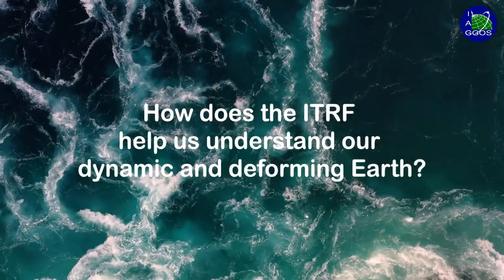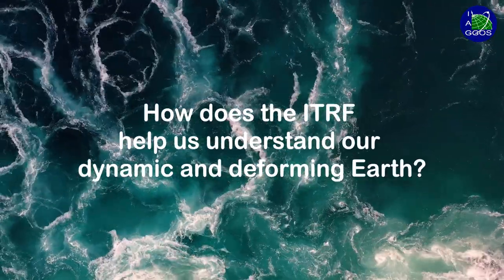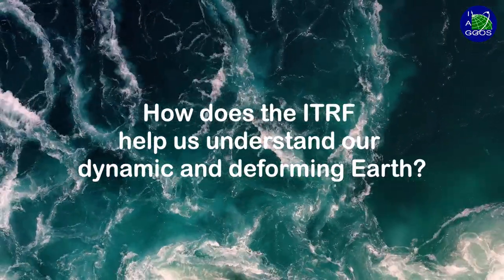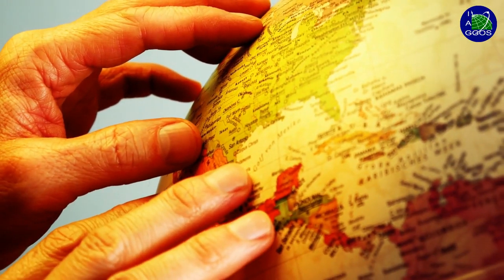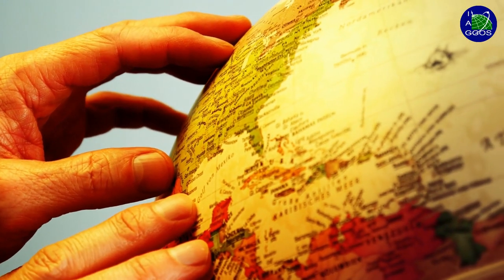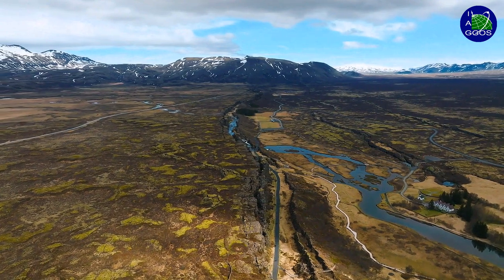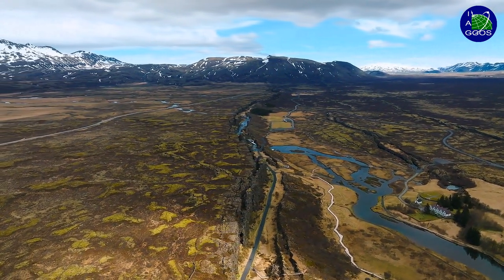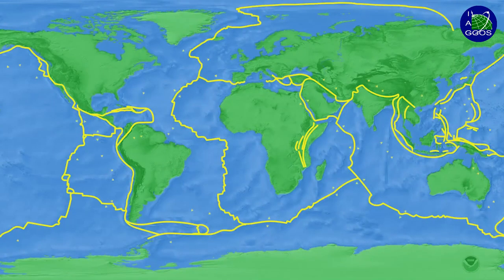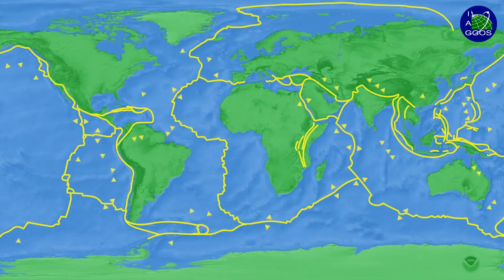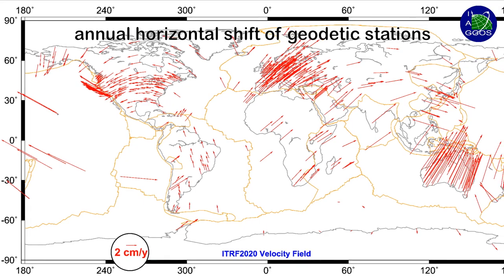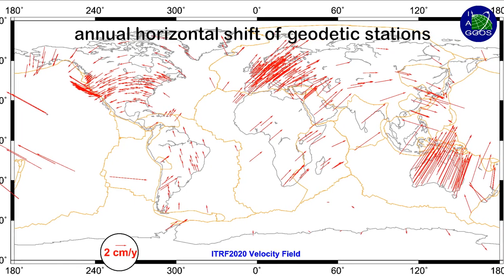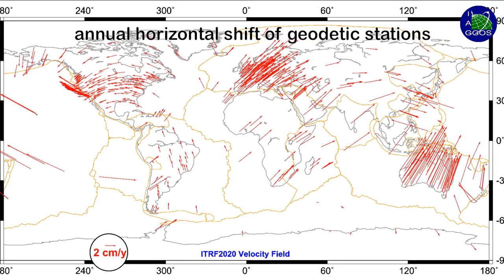How does the ITRF help us understand our dynamic and deforming Earth? Coordinates in the ITRF are time-dependent due to the constantly occurring changes in our planet's shape. These changes are caused by a number of geophysical processes, such as plate tectonic motions, and are illustrated by the horizontal station velocities of the ITRF solution.